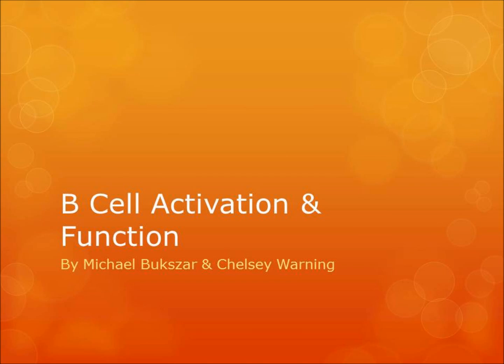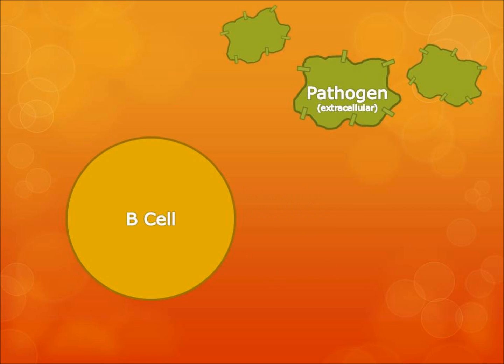B cells are very unique cells to the adaptive immune system and have very specific functions. However, in order to complete those functions, they must be fully activated. Once T cells have encountered a signal through an antigen-presenting cell, or APC, it signals B cells to set out and find the pathogen causing the infection. In this case, we will look through the process of B cell function and activation for an extracellular pathogen.